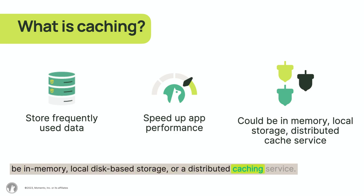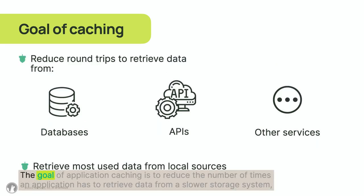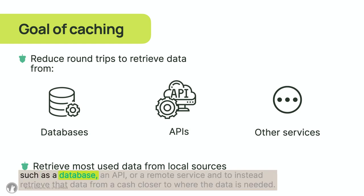Or a distributed caching service. The goal of application caching is to reduce the number of times an application has to retrieve data from a slower storage system, such as a database, an API, or a remote service, and to instead retrieve that data from a cache closer to where the data is needed.